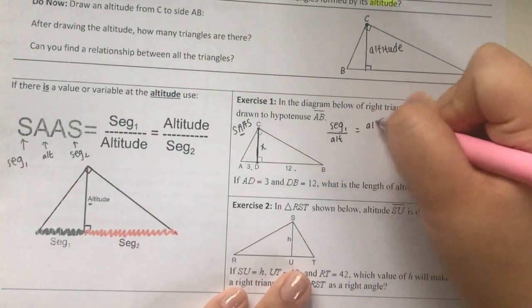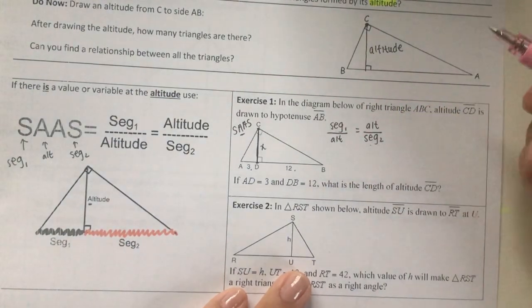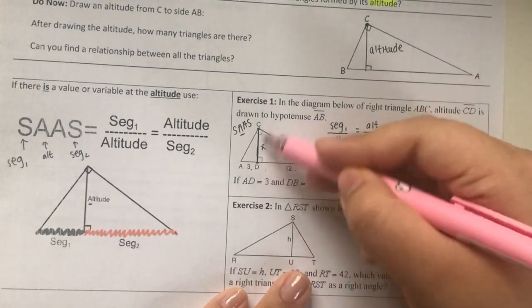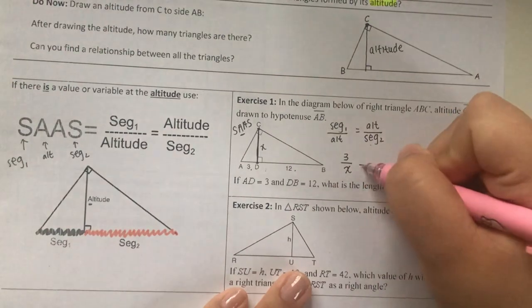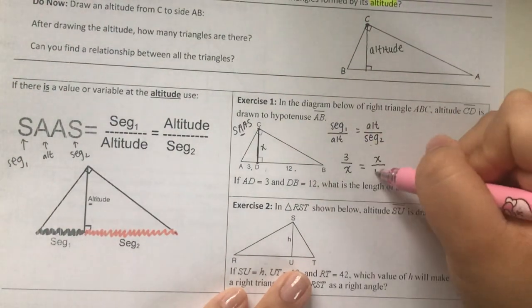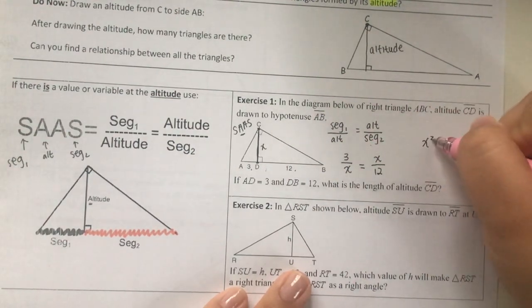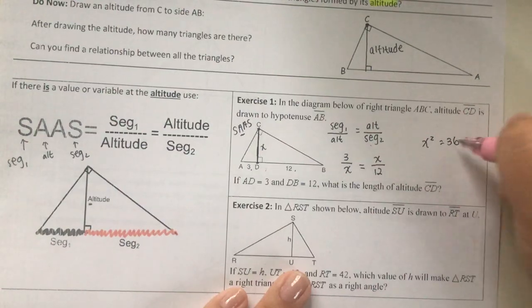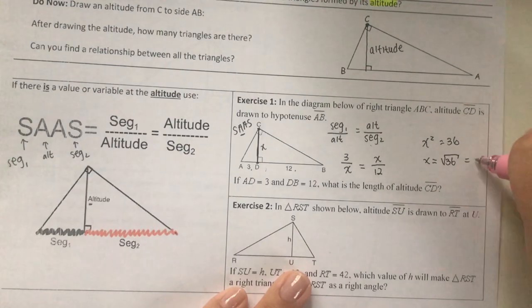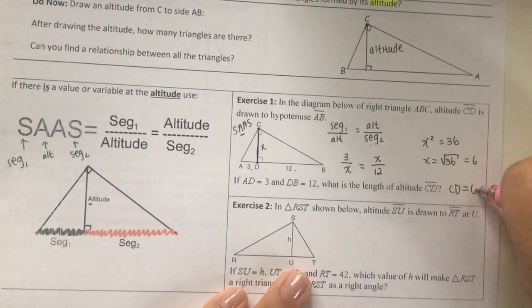Segment one over altitude equals altitude over segment two. Segment one is AD which is 3 over altitude CD, which I don't know, call it X. This equals altitude X over segment two which is 12. Cross multiply, so I get X squared equals 36. X equals square root of 36 which equals 6. So CD equals 6.